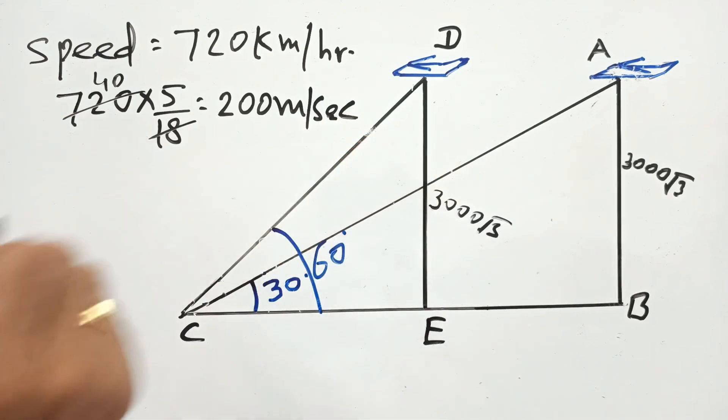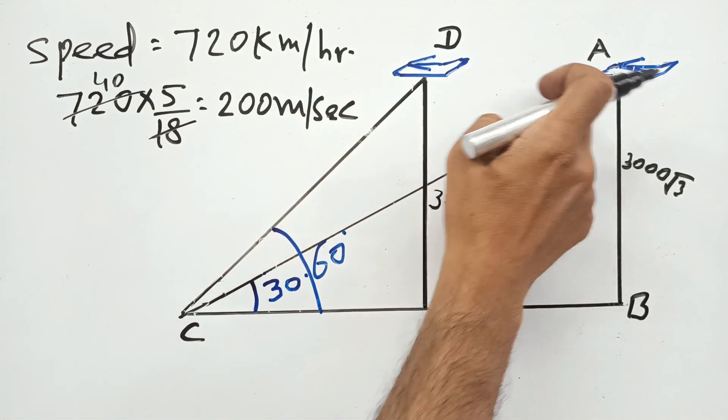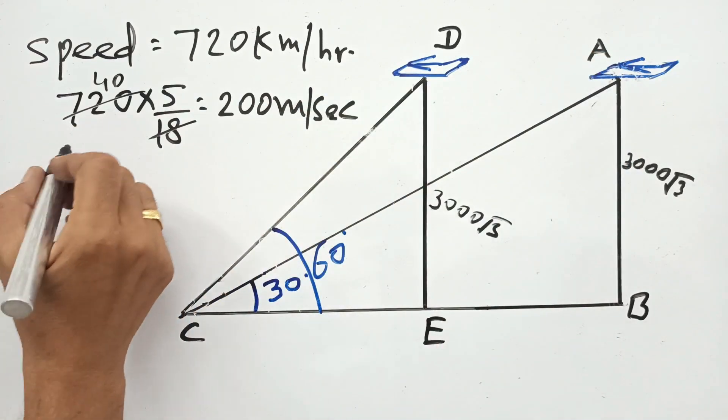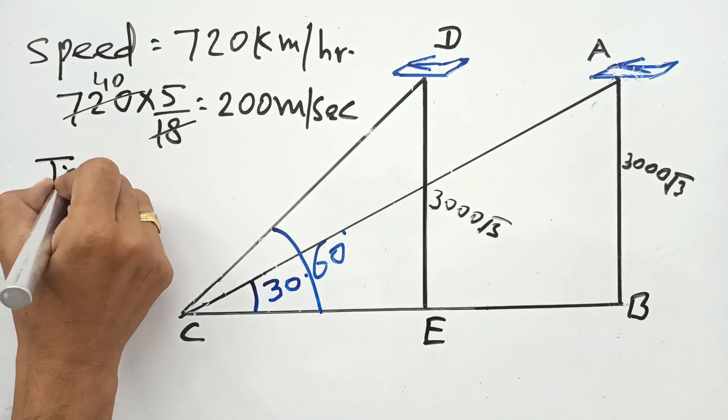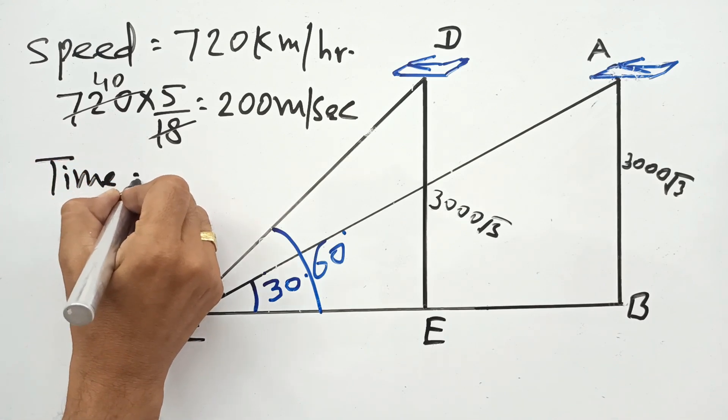It will be 200 meters per second. Now see what is the strategy we will use here - we will use the formula time equals distance upon speed.